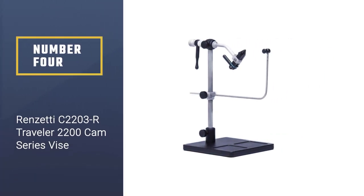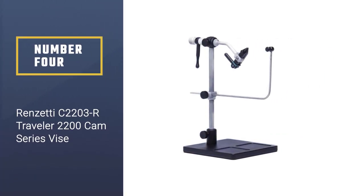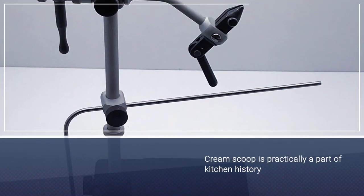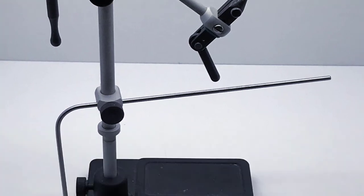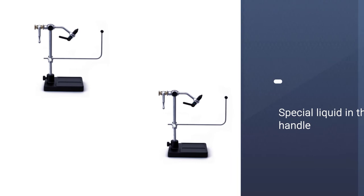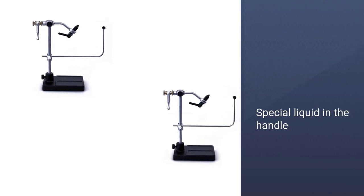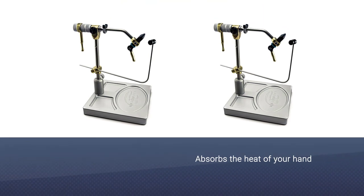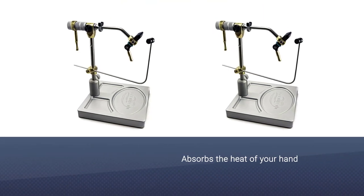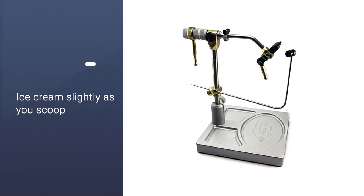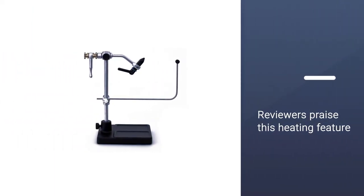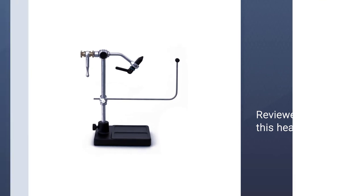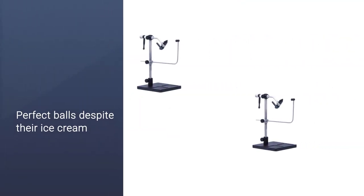Number four: Renzetti C 2203R Traveler 2200 cam series vice. With the Renzetti Traveler 2200, you enter the territory of professional fly tiers. First introduced in 1988, the Traveler rotary vice has been extremely popular ever since. The Renzetti Traveler 2200 comes in two versions: pedestal or C clamp, which makes it even lighter, ideal for traveling as the name suggests. Standard features for the Traveler 2200 cam series vice are an adjustable bobbin cradle, case-hardened cam jaws, rotary tension screw, a black powder-coated base with a 7-inch stem, or a black powder-coated C clamp with an 8-inch stem.